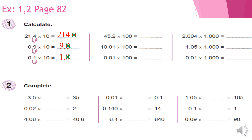Let's solve the first one in the second row: 45.2 times 100. I will move the point two steps to the right side — one, two. I don't have any number in the second step, so I fill it by zero. We get 4520.0, and that trailing zero is unnecessary. The first one in the last row: 2.004 times 1000 — I move the point three steps to the right side: 1, 2, 3, giving us 2004.0. That zero is also unnecessary and I can cross it.